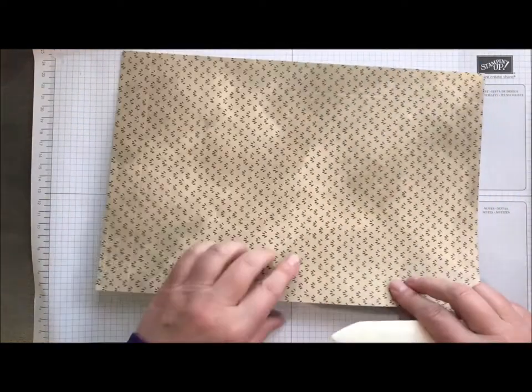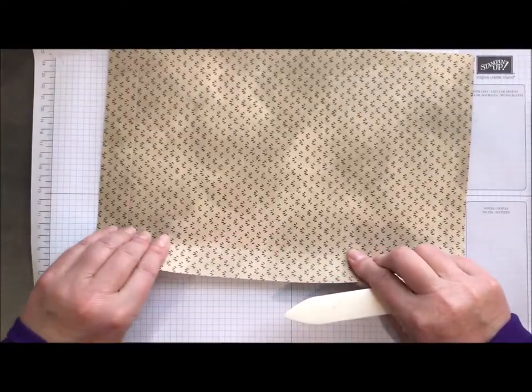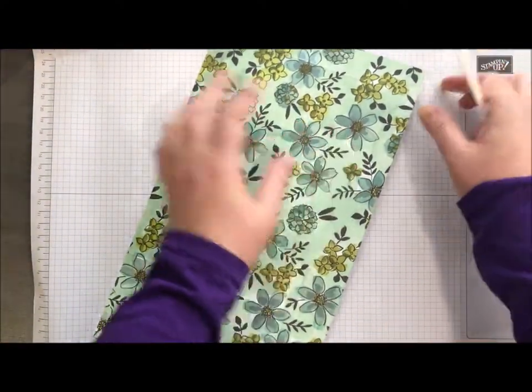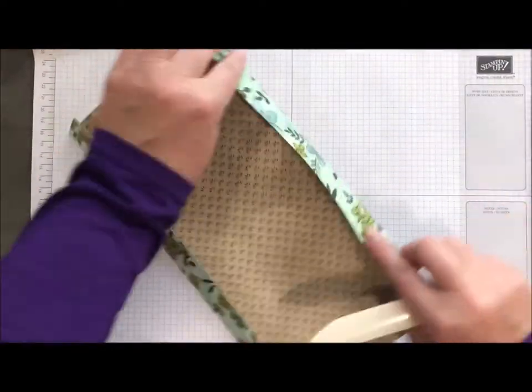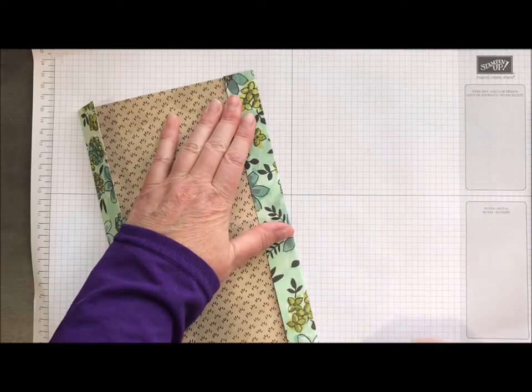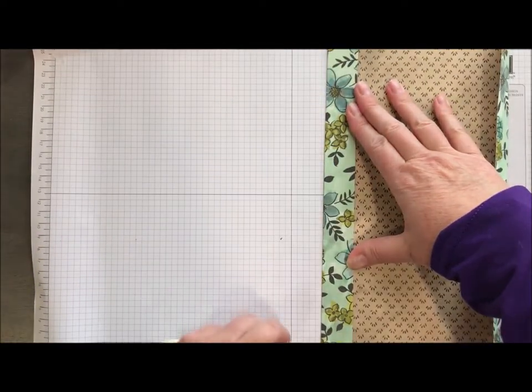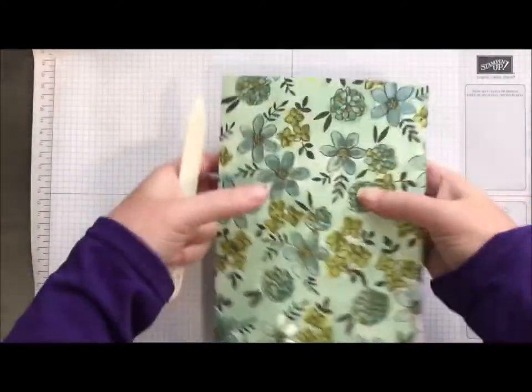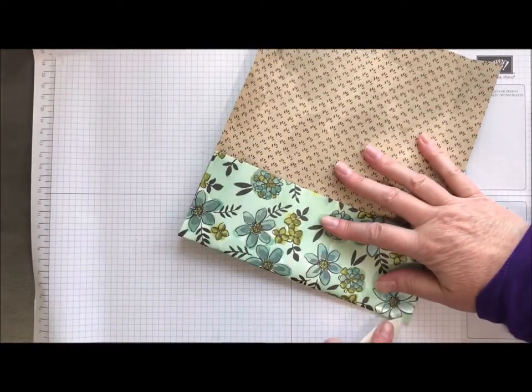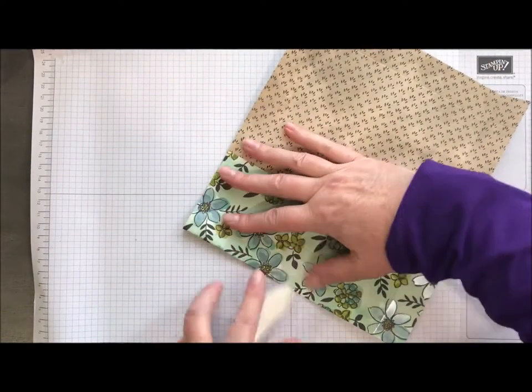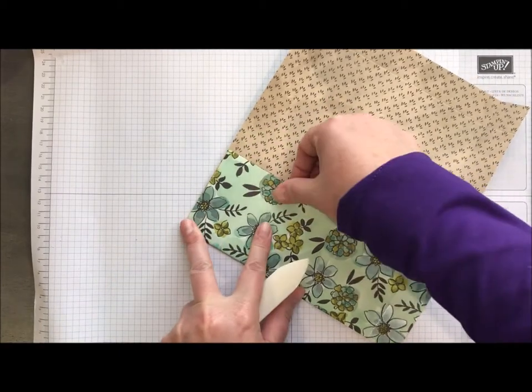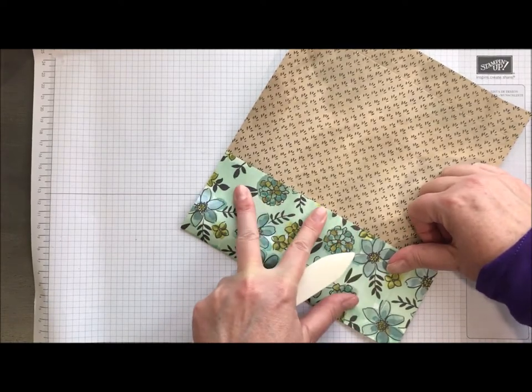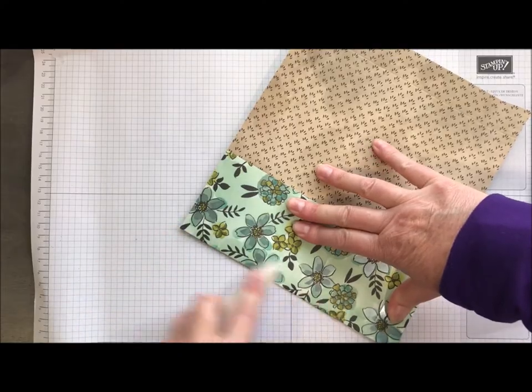And I'm going to grab a bone folder and I just want to make sure that I am making these scores nice and crisp here. And then that's going to help my bag go together much, much better when these scores are nice and crisp. Three inches is going to get scored because this is actually now, this has become the bottom of my bag. It's a little, you're a little bit off there. Why so? Make you work a little bit here.